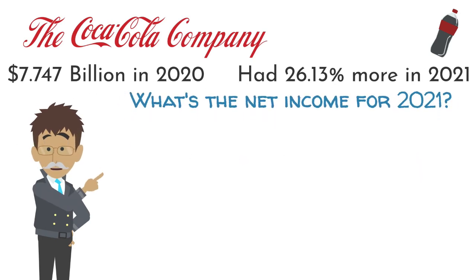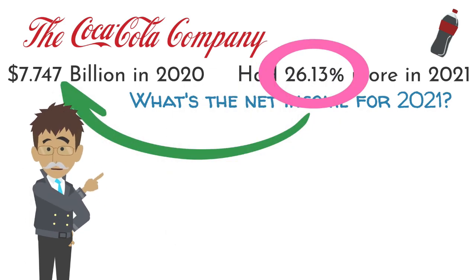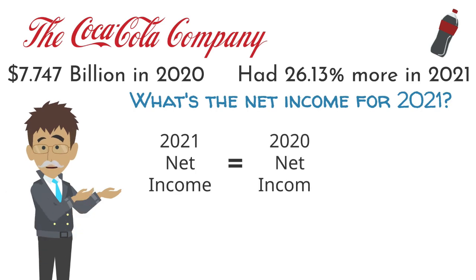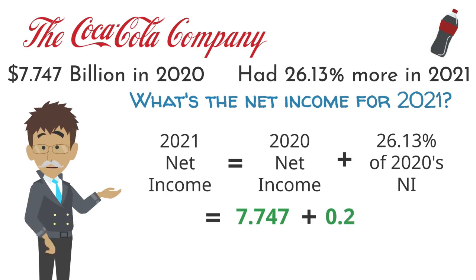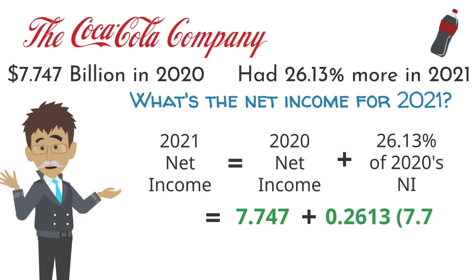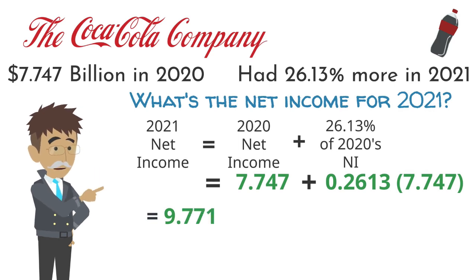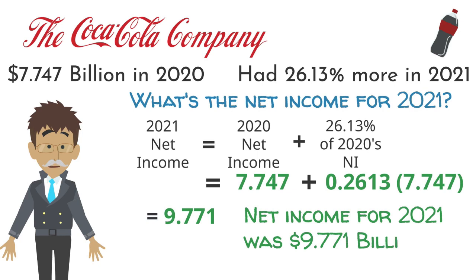To find the net income of the Coca-Cola Company for 2021, we need to add 26 and 13 hundredths percent of 2020's net income to the 2020 net income. We can write this as: 2021 net income equals the 2020 net income plus 26 and 13 hundredths percent of 2020's net income. Substituting the given values and converting the percent to a decimal, we get 7.747 plus 0.2613 times 7.747. Simplifying gives us 9.771. Therefore, the net income of the Coca-Cola Company in 2021 was 9.771 billion dollars.